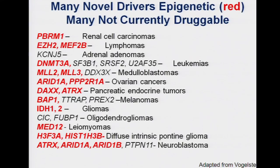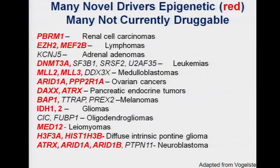Another problem is that sometimes we find drivers that are epigenetic — things that alter methylation of the genome, CpG islands, or methylation marks on histones that determine whether a gene will be activated. All of these mutations shown in red are clearly found as drivers in specific histologies, and we're finding them more and more frequently. But we don't have targets for those — we don't really know how to target many of these mutations. So resistance is a problem, clonal evolution is a problem, and finding driver mutations that we don't have drugs for is yet another problem.